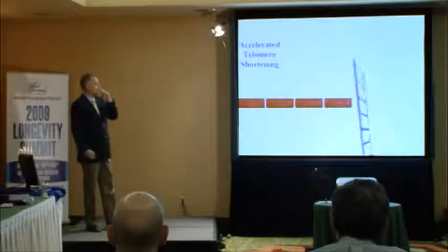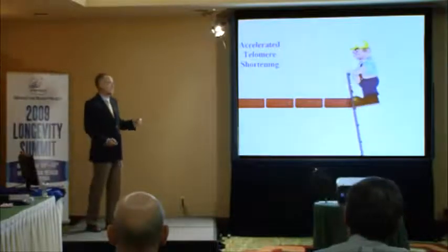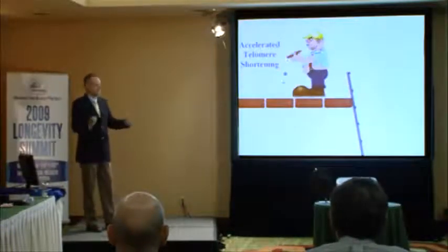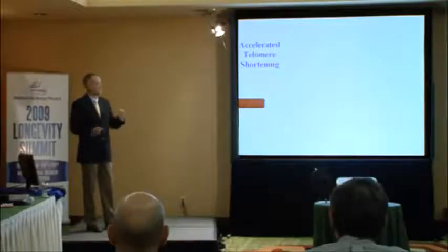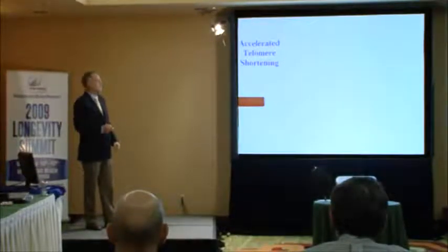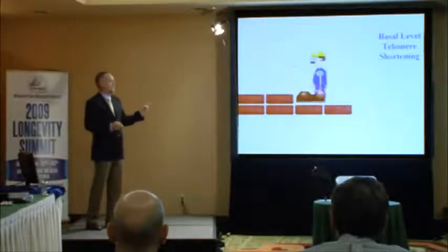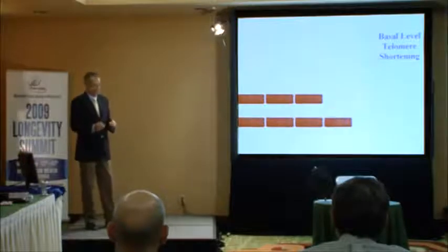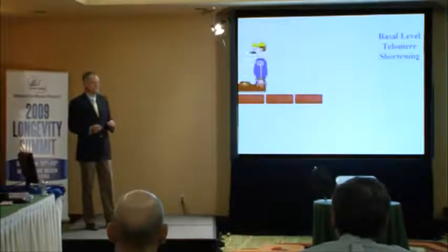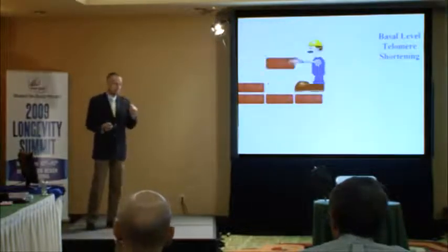I call this the accelerated telomere shortening, which we can control. I recommend everybody live as healthy a lifestyle as you can so that you're around for when cures for aging are available. But there's still nothing that can control this basal level of telomere shortening — and that's what my company is trying to work on. Even if this isn't something that's causing aging, our lifespans are clearly limited by the length of our telomeres, and something has to be done to solve the telomere shortening.